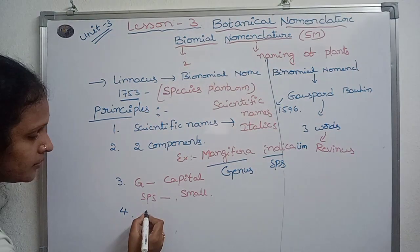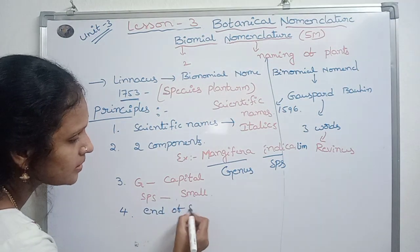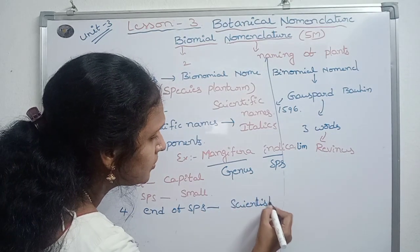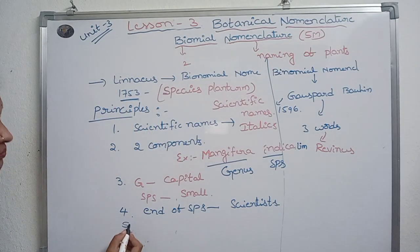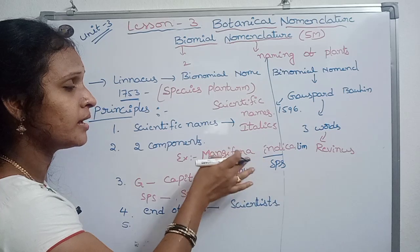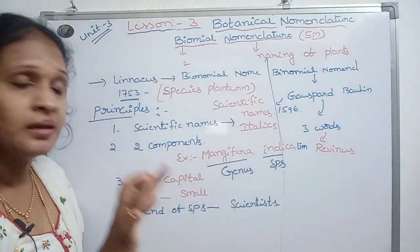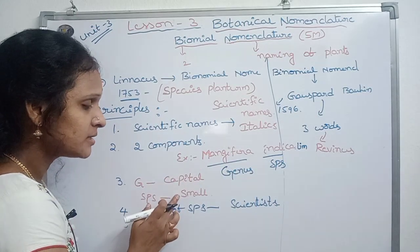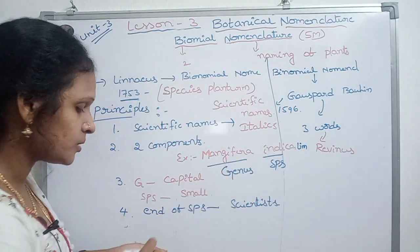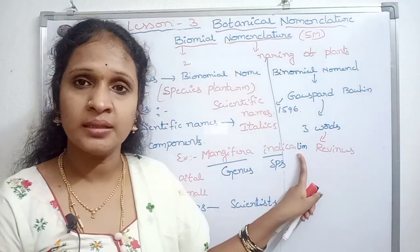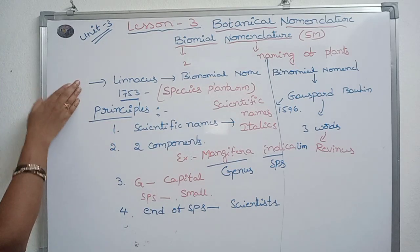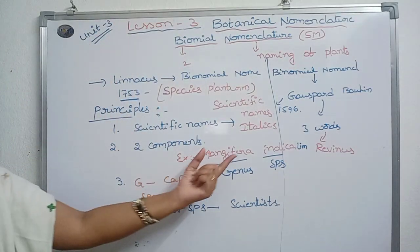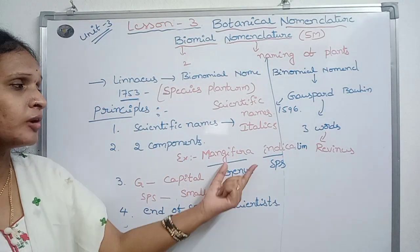This is the last point: at the end of the species name, mention the scientist's name — that is Linnaeus. These words are in italics, maintain the gap, the first letter is capital, and the second word is in small letters. These are the principles.